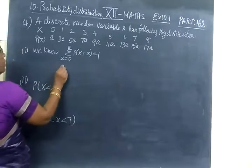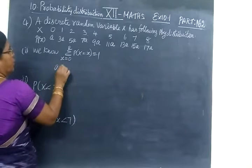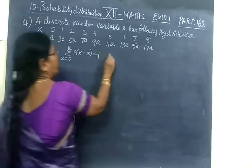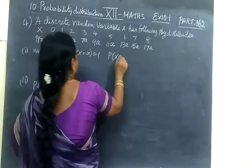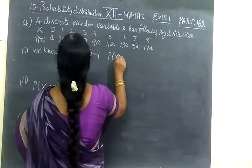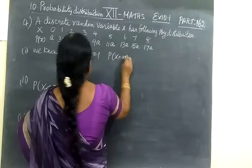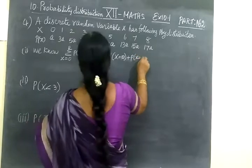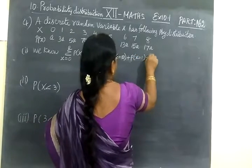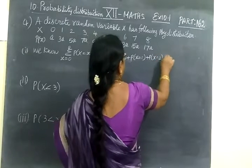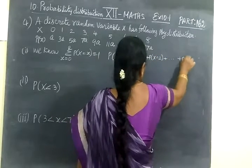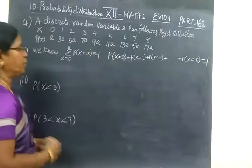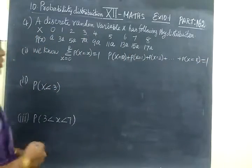So now we are adding all this. First write P of X equal to 0 plus P of X equal to 1 plus P of X equal to 2 plus etc up to P of X equal to 8. That is equal to 1. Sum of the probability mass function is equal to 1.